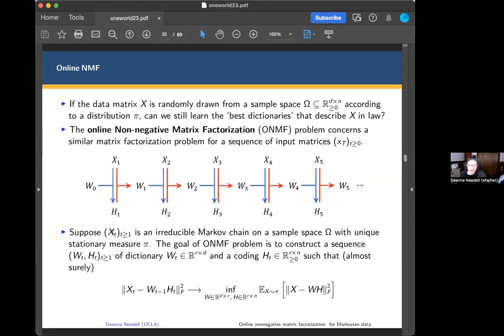We would like to say something like this. If Xt are iid or if they're a Markov chain, some assumptions here, then we would hope that this online NMF approach would give you a sequence of W and H matrices such that maybe almost surely you get this sort of convergence. As time goes on, the error in your factorization would converge to the best possible error over all W and H of the expected loss. That's the natural thing to ask.